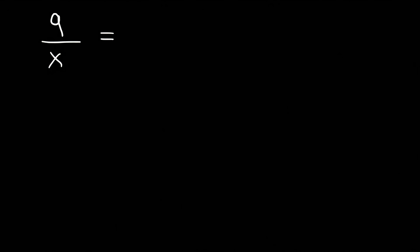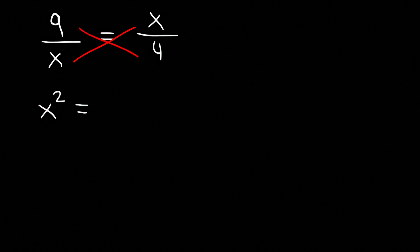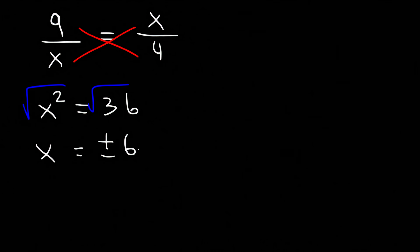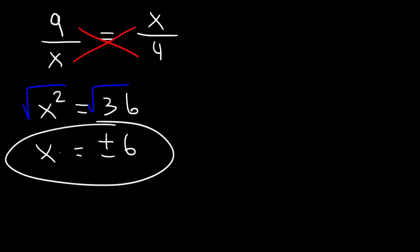Try this one: 9 divided by x equals x over 4. Once again we have two fractions separated by an equal sign, so let's cross multiply. x times x is x squared, and 9 times 4 is 36. All we need to do is take the square root of both sides. The square root of 36 is plus or minus 6, so there are two answers: positive 6 and negative 6.